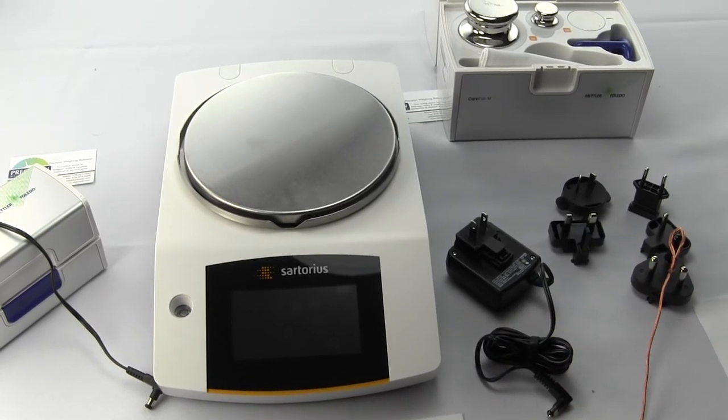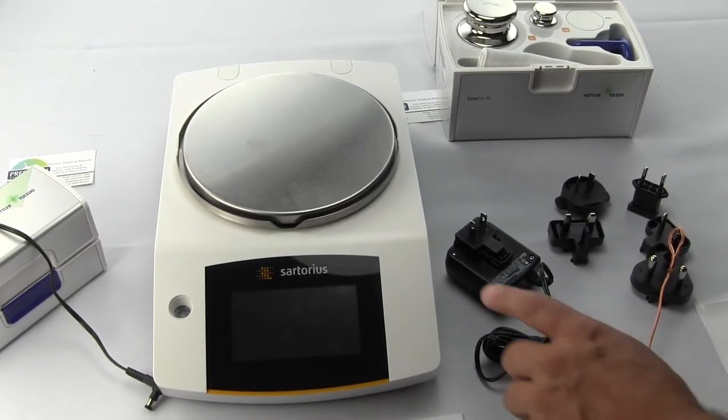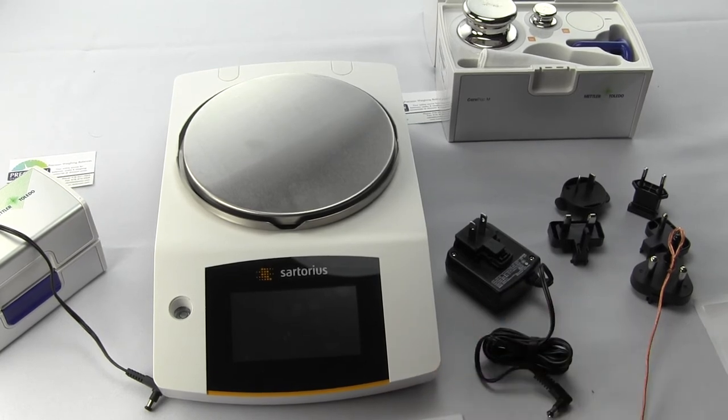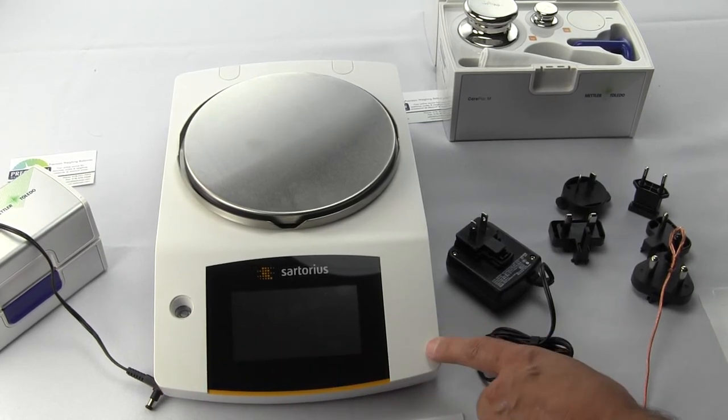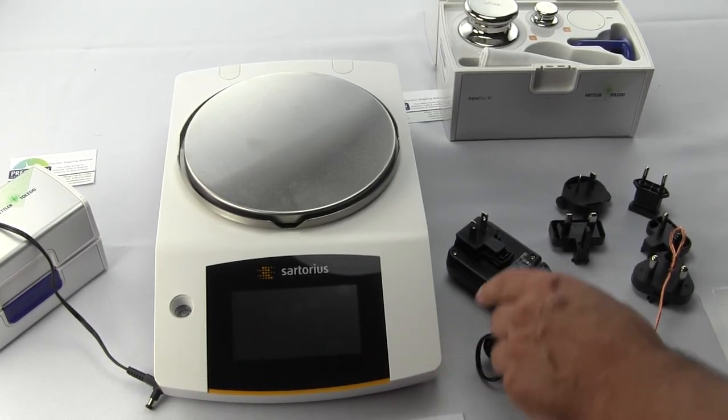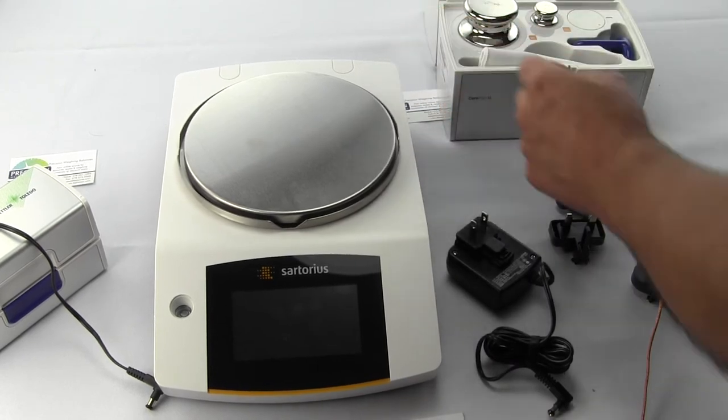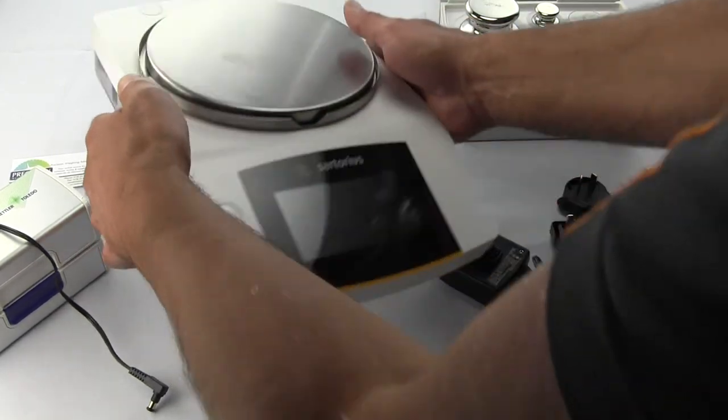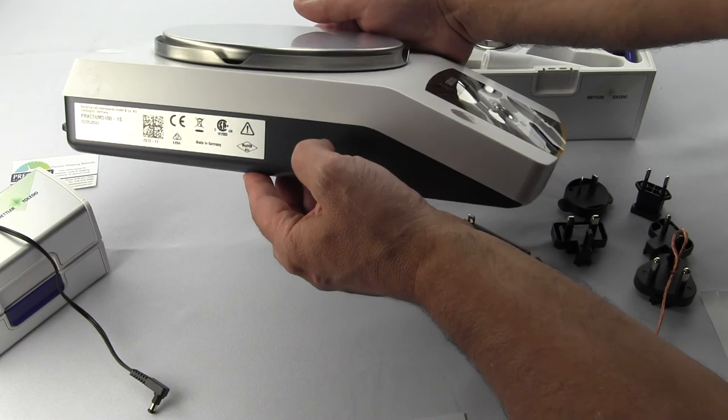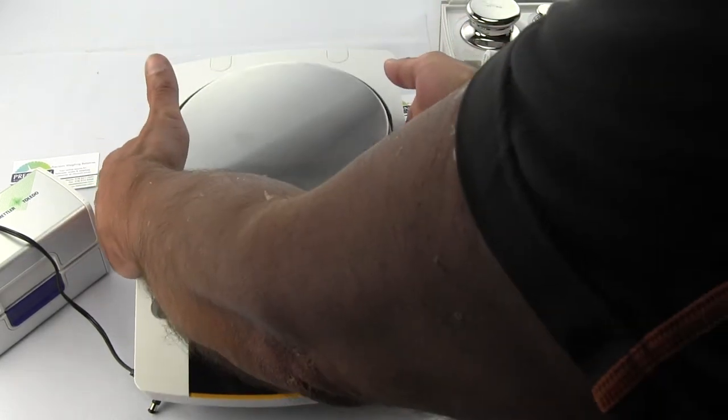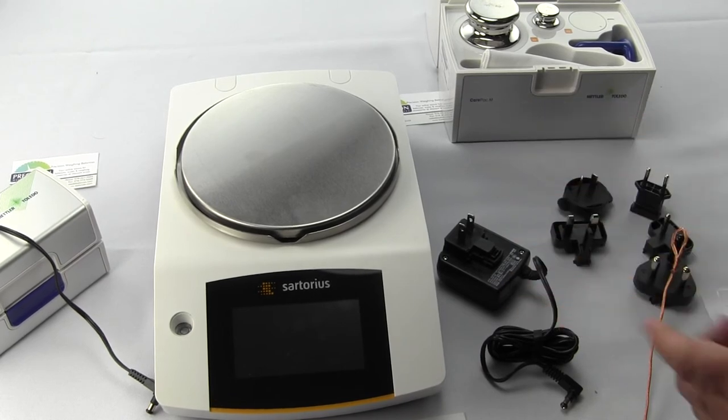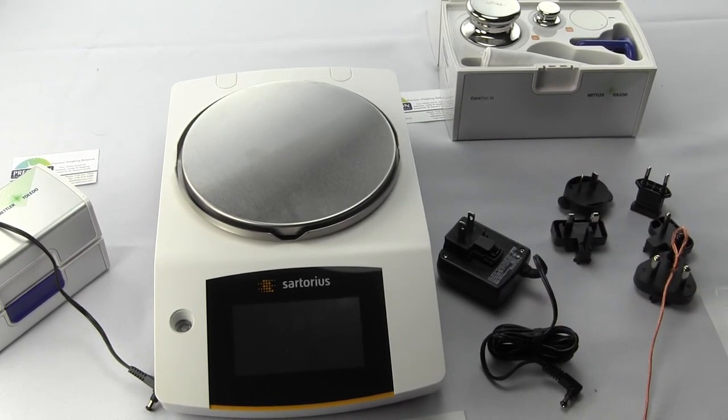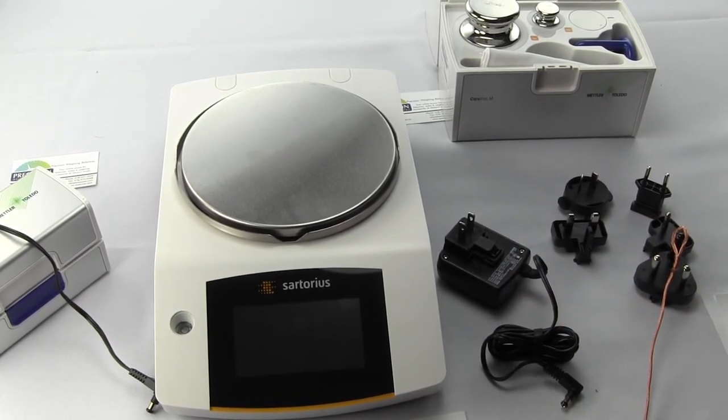The dimensions—this is all in the manual—but you're looking at 8.6 inches in width, 14.1 inches in depth, and 3.75 inches in height. For a lab it's a nice large footprint, but if you have very limited space this is something to consider before purchasing.